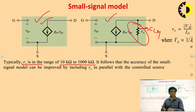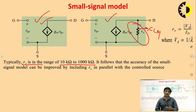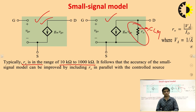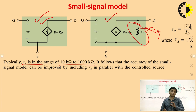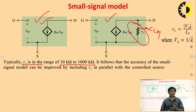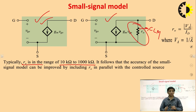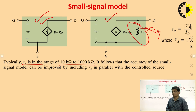In discrete circuits, the effect of R0 is very small, so many times we ignore R0 in discrete circuits. But not in IC amplifiers, because when designing IC amplifiers, R0 plays a very crucial role and we cannot ignore it. Here we are studying this topic from the discrete circuit point of view, so we can neglect R0.